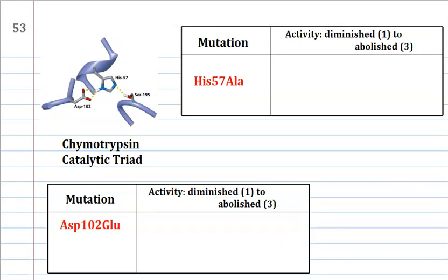Histidine 57 alanine. Well, of course, you know, when we bring in alanine, alanine can't do a whole lot. It's just kind of the methyl group is a bit of a silencer. On what's going on.